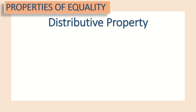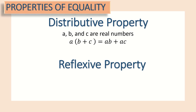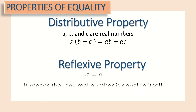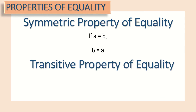Next, the distributive property states that a multiplied to the sum of b + c is equal to ab + ac. Next, the reflexive property means that a = a — any real number is equal to itself. Next, the symmetric property of equality states that if a = b, then b = a. And lastly, the transitive property of equality states that if a = b and b = c, then a = c.